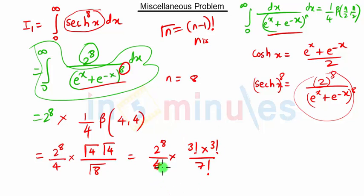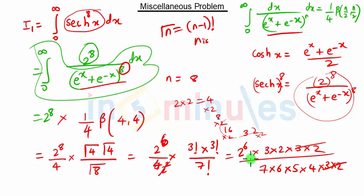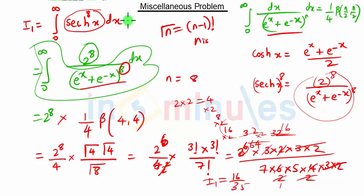Simplifying: 4 is 2 squared so two 2s cancel from 2^8, leaving 2^6. Then 2^6 times 3! times 3! upon 7! — expanding 7! as 7 × 6 × 5 × 4 × 3 × 2 and cancelling 3 × 2 from numerator and denominator — gives 2^6 which is 64, times 6 upon 7 × 5 × 4 × 6, simplifying to 16 upon 35. So the final answer is i equals 16 upon 35. This is how we solve problems on Beta and Gamma functions.